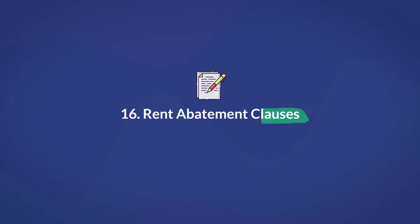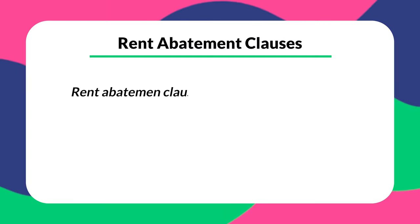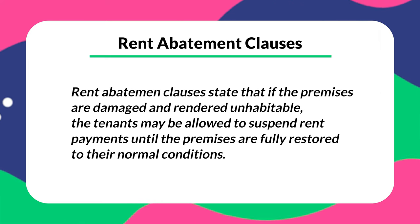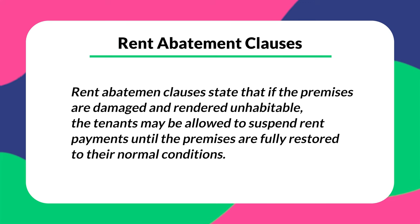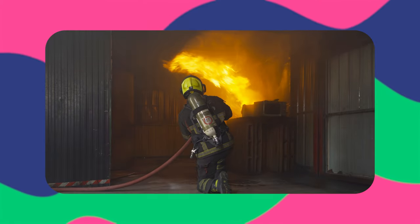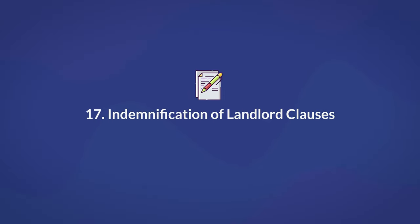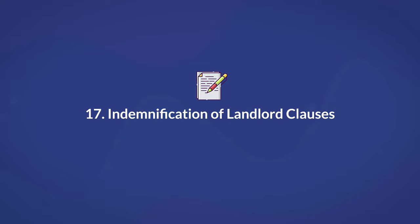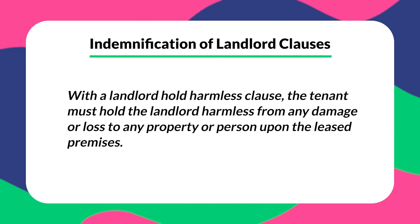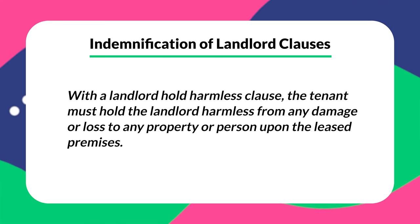Number sixteen is a rent abatement clause. These leases work as a provision stating that if the premises are damaged and rendered uninhabitable, the tenants may be allowed to suspend rent payments until the premises are fully restored to their normal conditions. This type of clause may be written according to what the landlord considers an uninhabitable environment, like fires or other natural disasters, although the court may think otherwise if there's a legal dispute or you're trying to evict your tenant. Number seventeen is the indemnification of landlord clause. With the landlord hold harmless clause, the tenant must hold the landlord harmless from any damage or loss to the property or persons upon the leased premises, protecting the landlord from any damages caused by the tenants while occupying the premises.